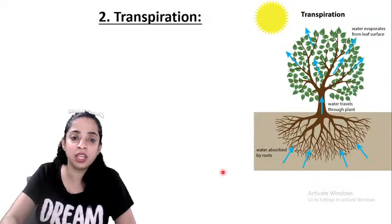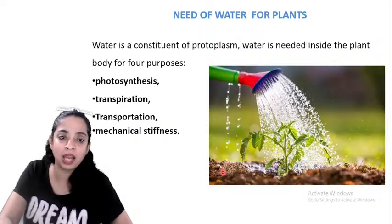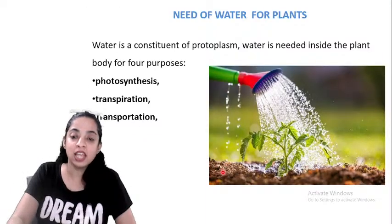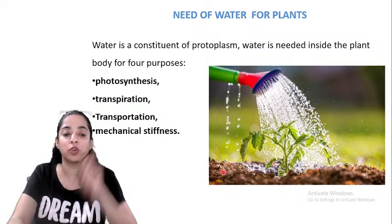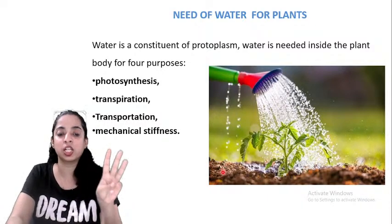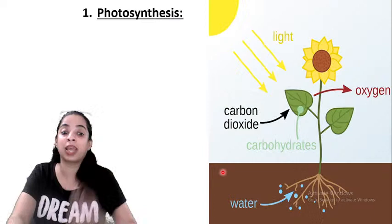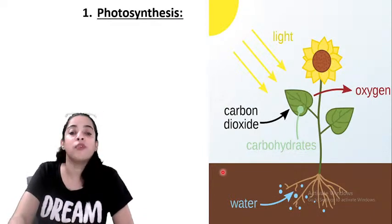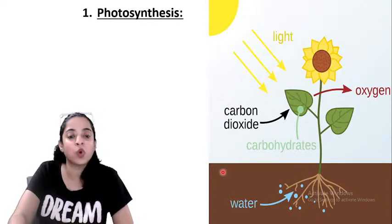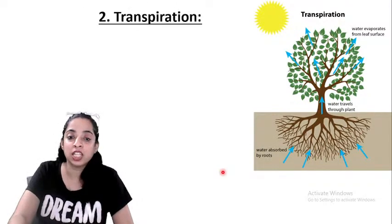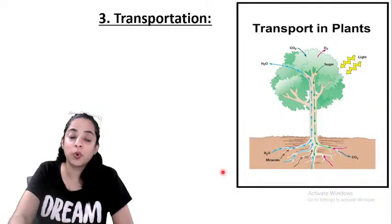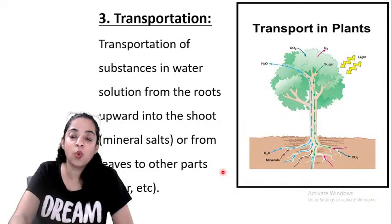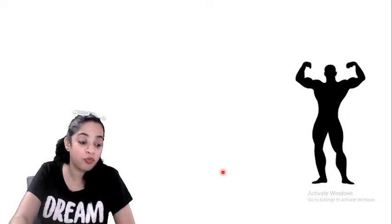So to recap: why is water needed for plants? For photosynthesis, for transpiration, for transportation, and for mechanical stiffness. Water is the raw material for photosynthesis. For transpiration, also water is needed. For transport in plants, water is also needed.